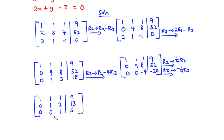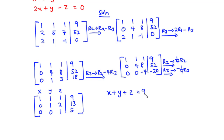We have now made all elements in the leading diagonal equal to 1, and elements below the leading diagonal equal to 0. We call this the row echelon form. Transforming back to a system of equations: equation 1 is x plus y plus z equals 9; equation 2 is y plus 2z equals 13; and equation 3 is z equals 5.